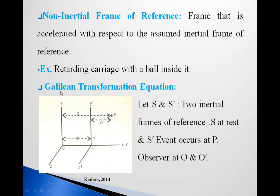We will now see the Galilean transformation equations. In this figure, S and S' are two inertial frames of reference. The S frame has x, y, z coordinates, and the S' frame has x dash, y dash, z dash coordinates. S is at rest and S' is in uniform motion with respect to the S frame of reference, moving with velocity v.